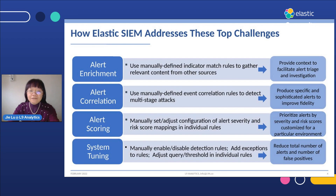Elastic SIEM includes features in multiple aspects to address the top challenges. Particularly, alert enrichment using indicator match rules allows context to be gathered from other sources, including threat intelligence feeds, to facilitate alert triage and investigation. Event correlation rules produce specific and sophisticated alerts, which improve the system's ability in detecting multi-stage attacks.